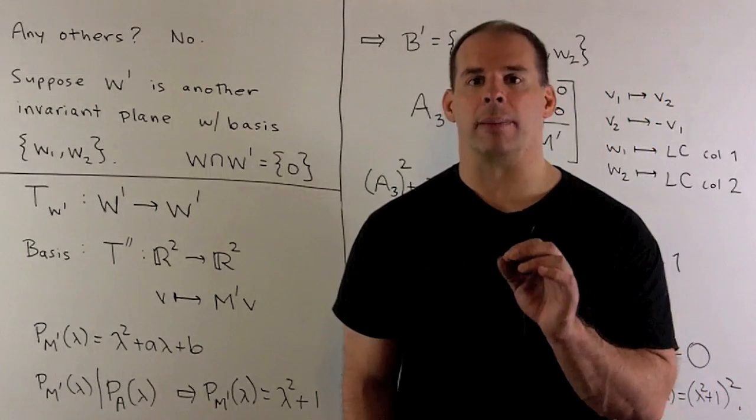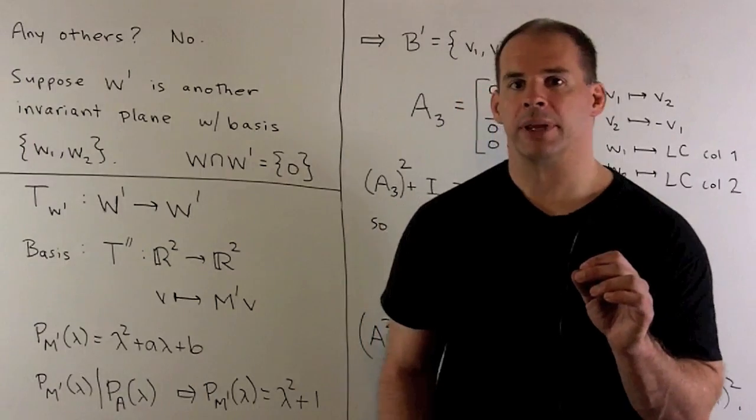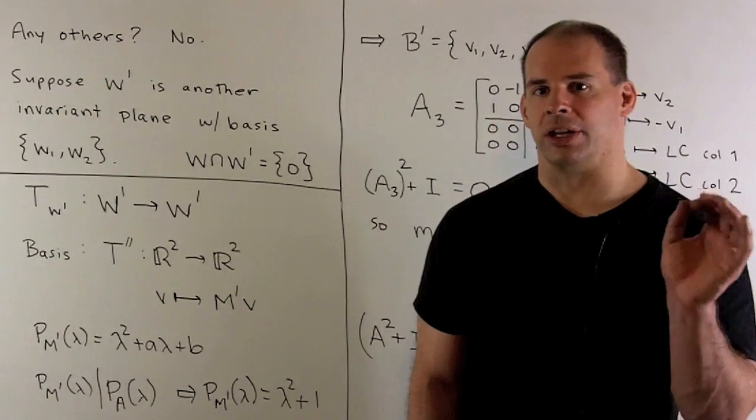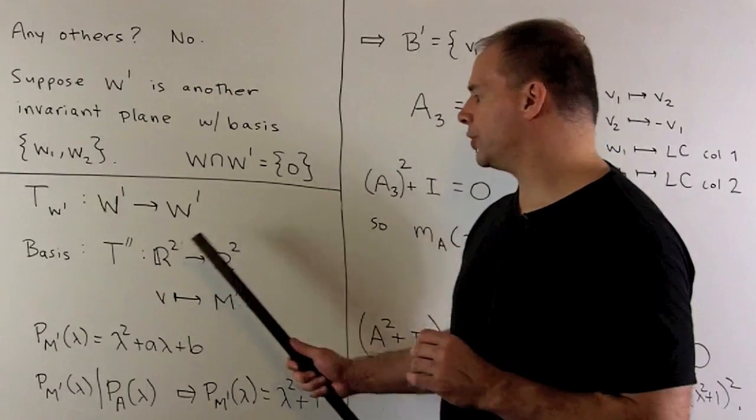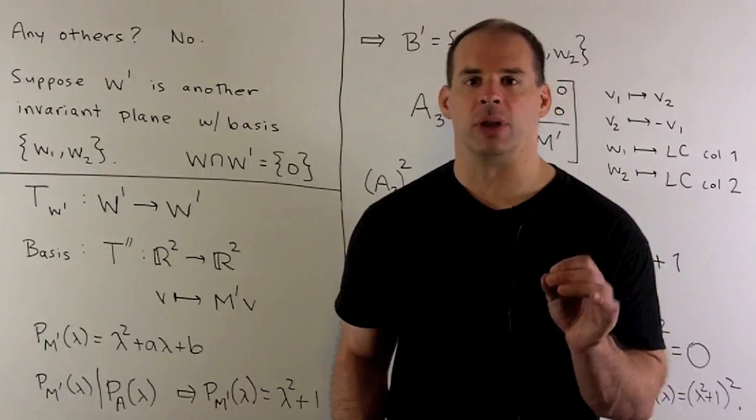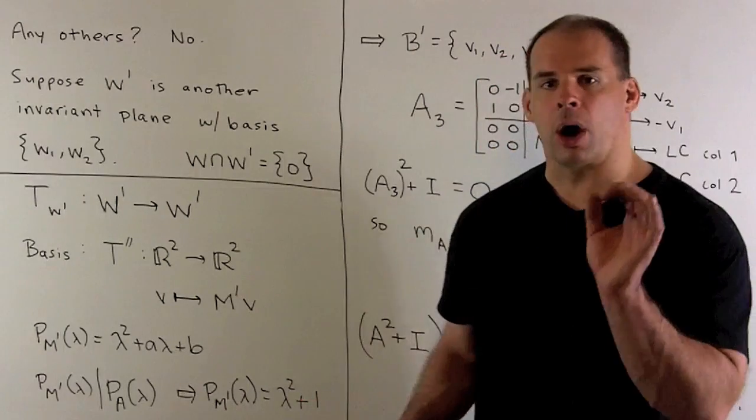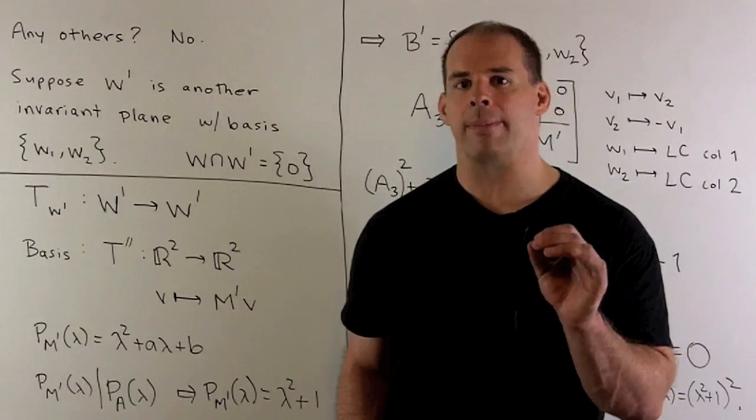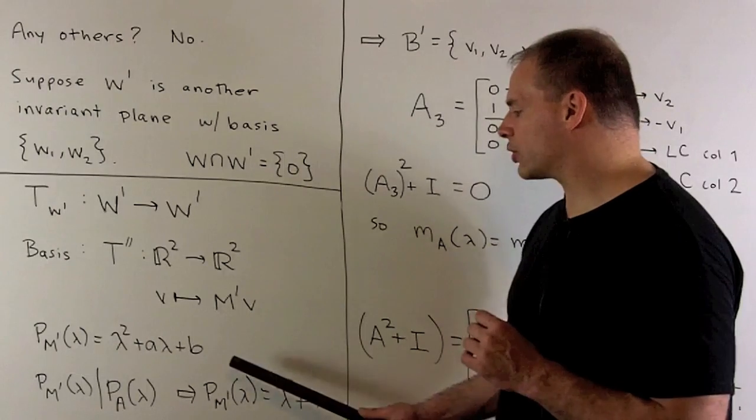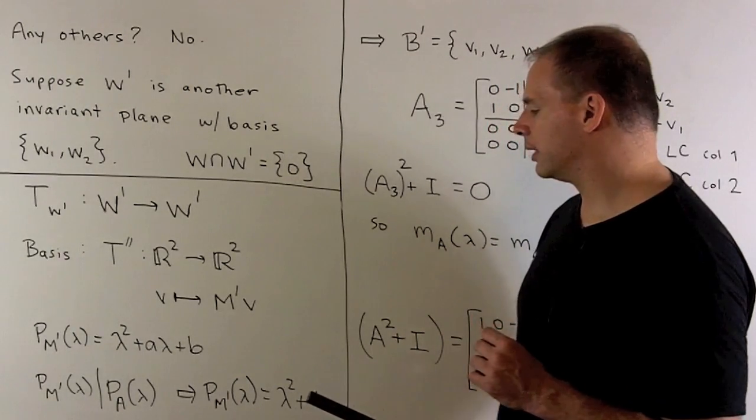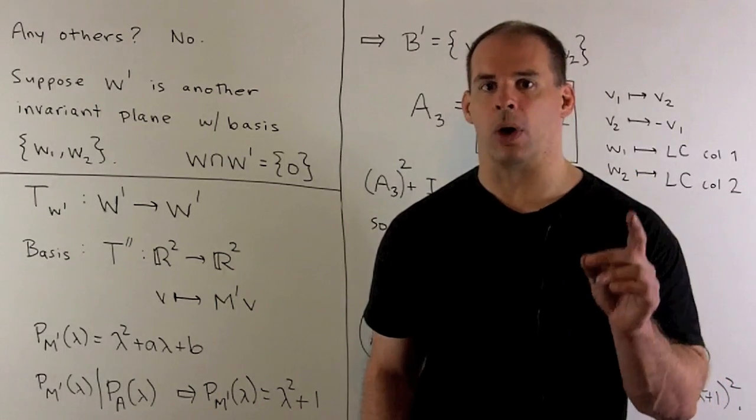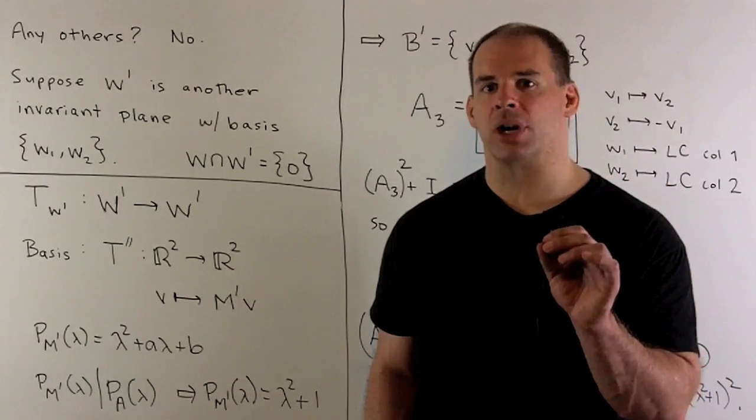Let's take a look at what's happening on W′. If we restrict T to W′ by the invariance property, W′ gets carried back to itself. With our basis, that induces a linear transformation, T″, from R² to itself. And that'll be given by some matrix, M′. Now, the characteristic polynomial of M′ is going to be a quadratic. Our previous argument shows that the characteristic polynomial of M′ divides the characteristic polynomial of A. Since A is only irreducible quadratic factors, that means the characteristic polynomial of M′ equals lambda squared plus 1. The minimal polynomial for M′ divides the characteristic polynomial, so it, too, has to be lambda squared plus 1. So, M′ squared plus the identity matrix equals 0.